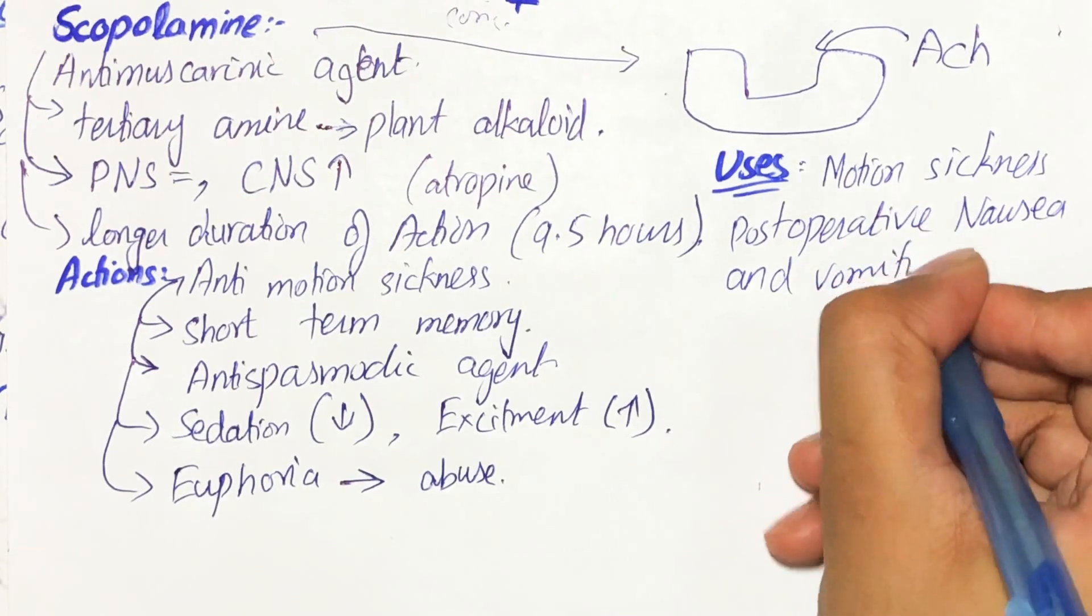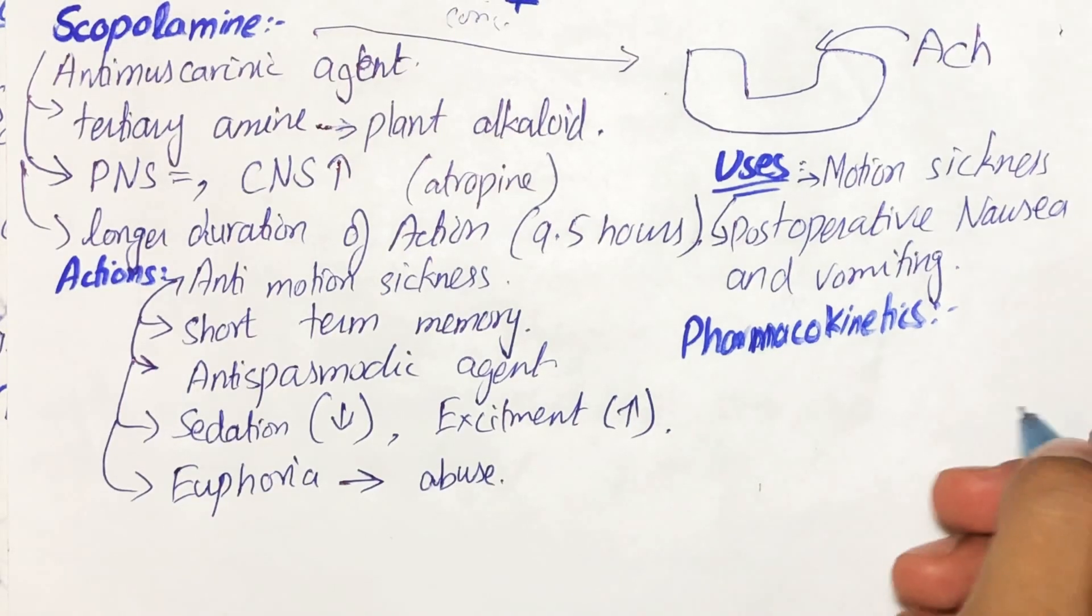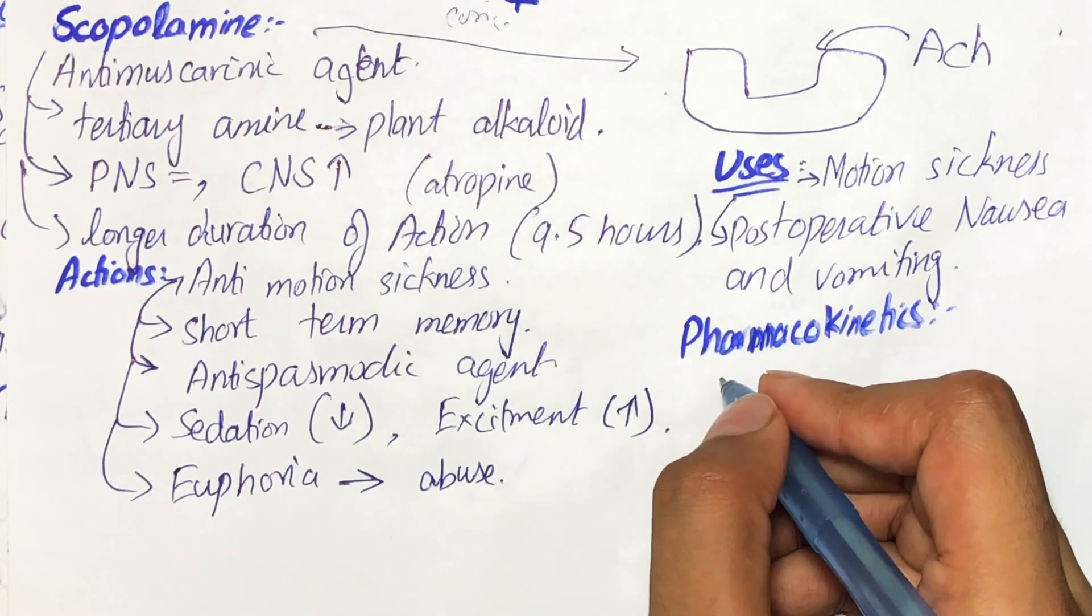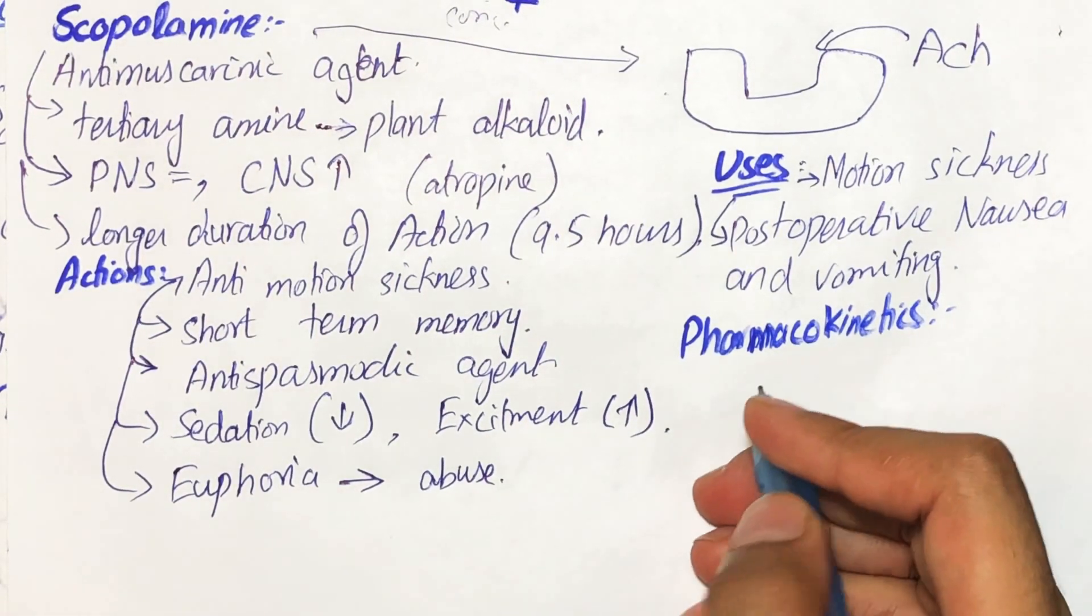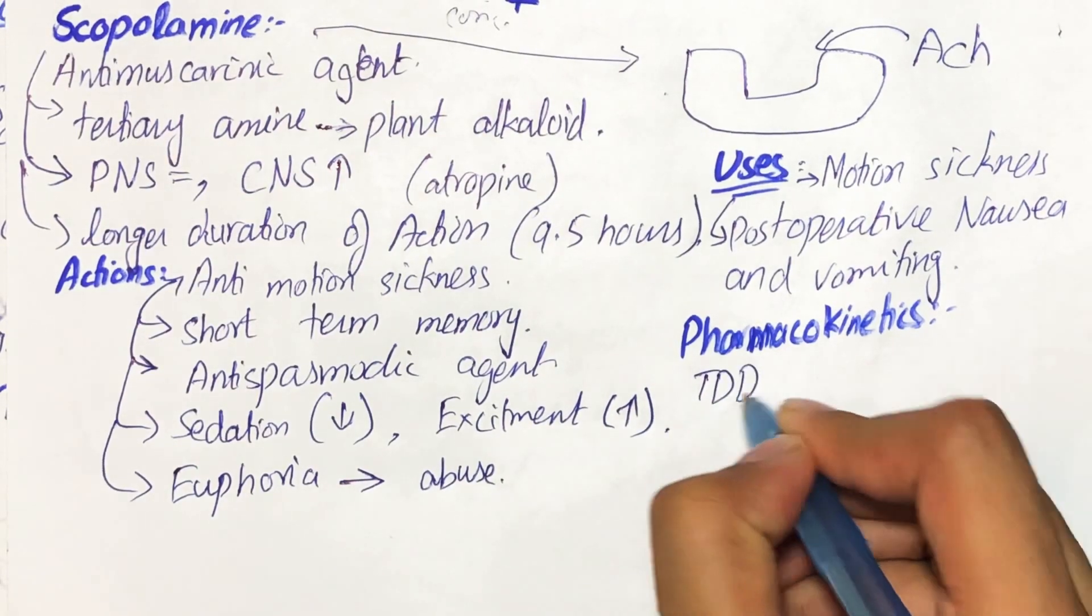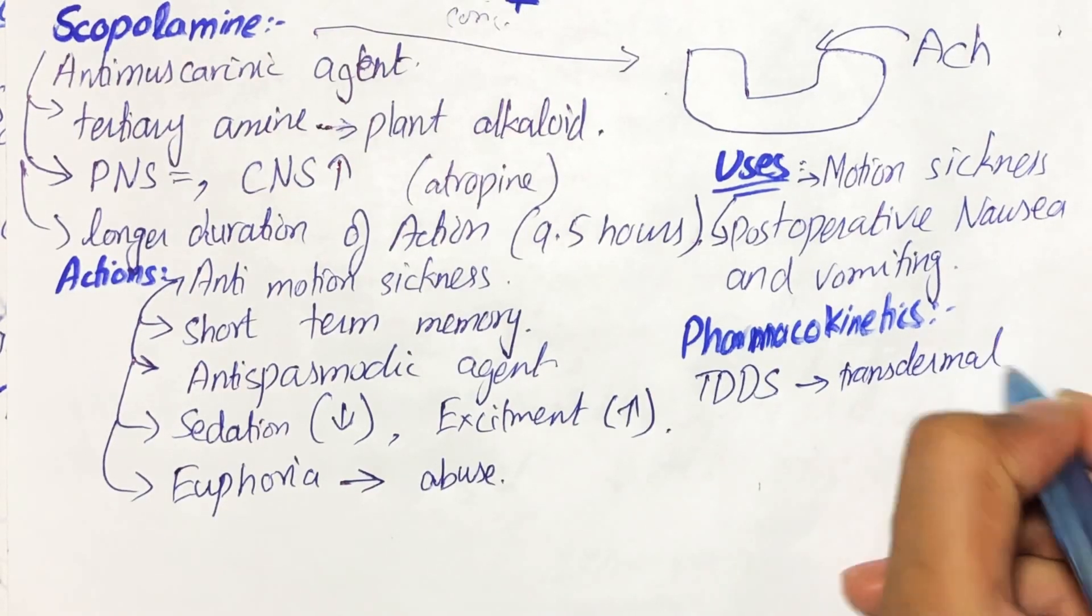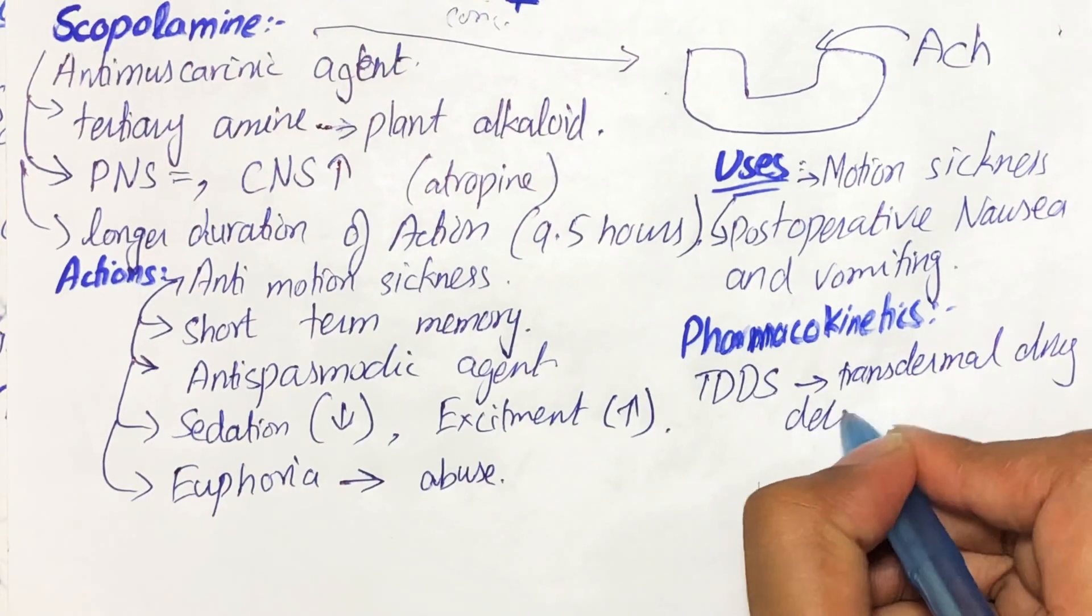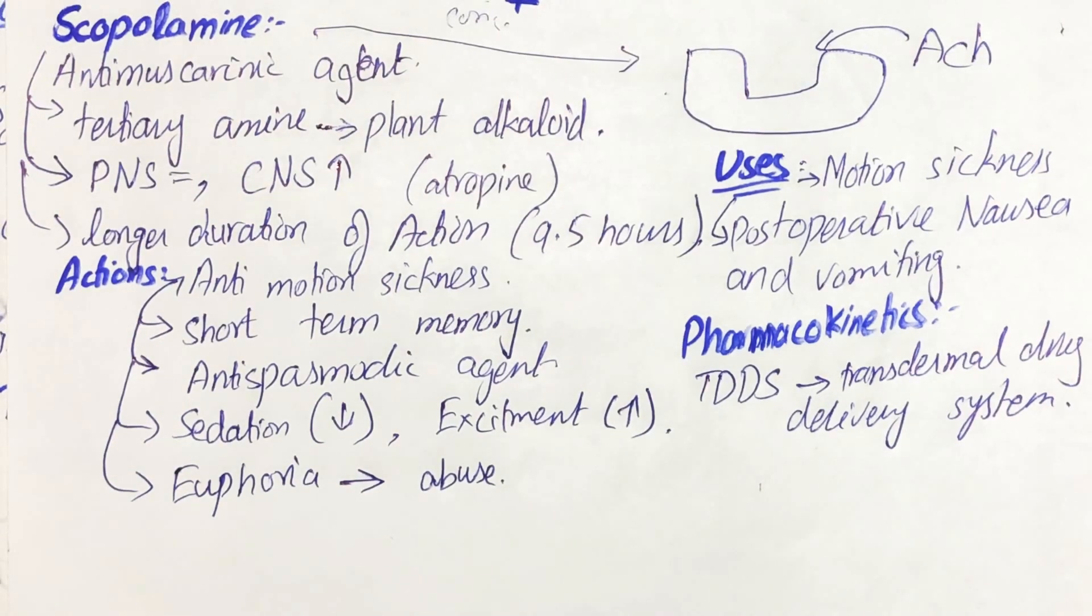So if we talk about the pharmacokinetics of this agent, this agent is poorly absorbed or has a very low bioavailability of the agent. Therefore, we give it through TDDS, which is transdermal drug delivery system. In this drug delivery system, there is topical application of patches of drug which slowly release drug into the body.